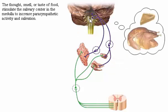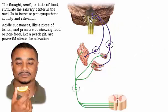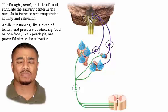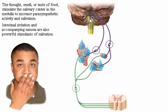The thought, smell, or taste of food stimulates the salivary center in the medulla to increase parasympathetic activity and salivation. Acidic substances like a piece of lemon and the pressure of chewing food or non-food in the mouth like a peach pit are powerful stimuli for salivation. Intestinal irritation and accompanying nausea are also powerful stimulants of salivation.